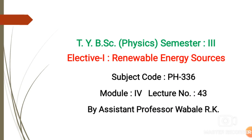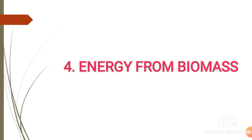Hello students. In our previous video we covered the floating dome type biogas plant, also called constant pressure or KVIC biogas plant, and we discussed its advantages and disadvantages. The second type is the fixed dome or constant volume or Janta model type biogas plant, and in this video we will see the advantages and disadvantages of fixed dome type biogas plants.